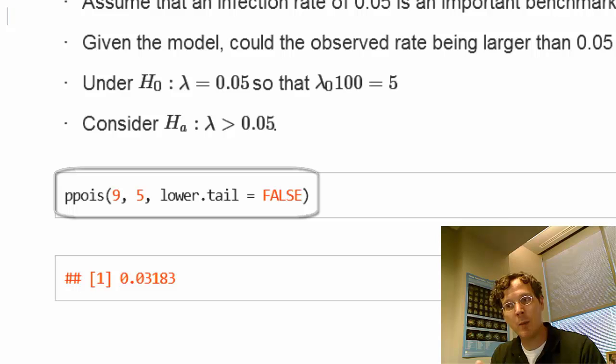So we want ppois for the Poisson probability. We want to put in 9 because we want the upper tail. Then the Poisson rate is 0.05 times the 100 person days at risk, so 5.